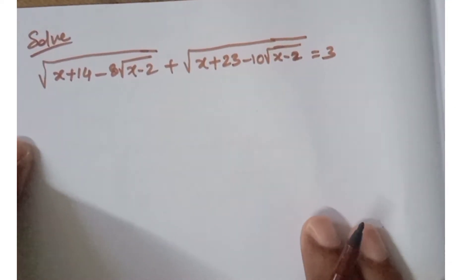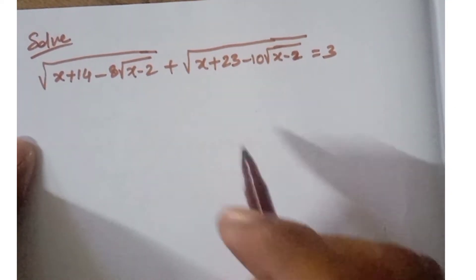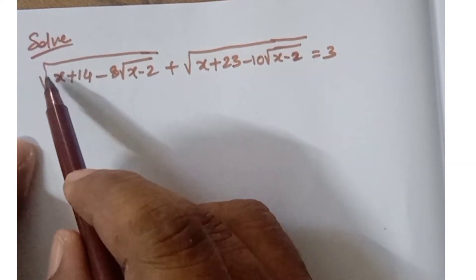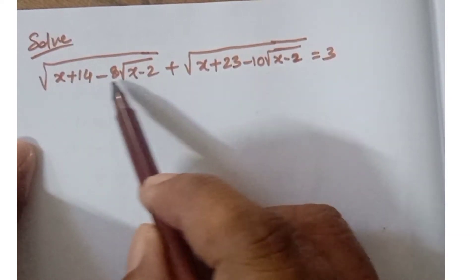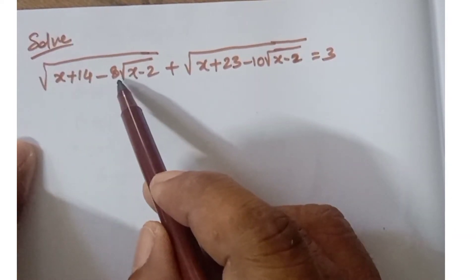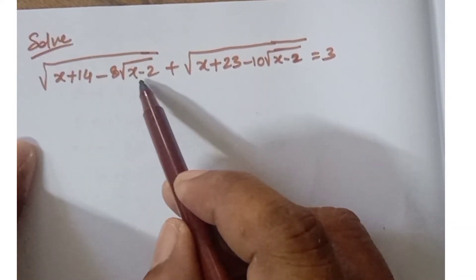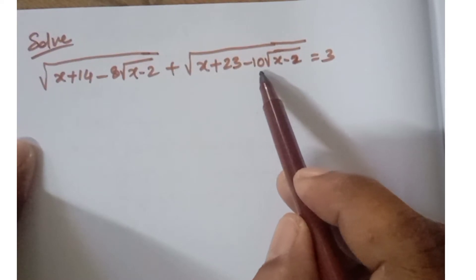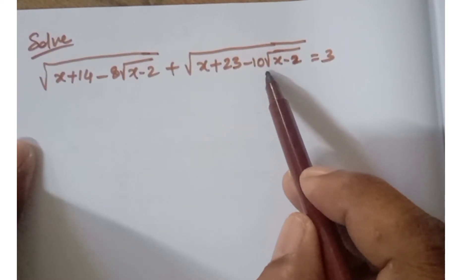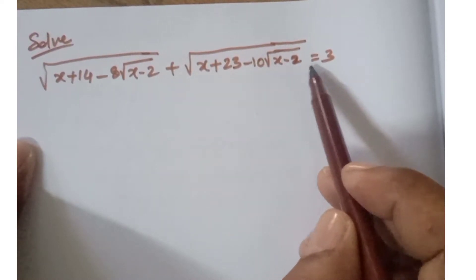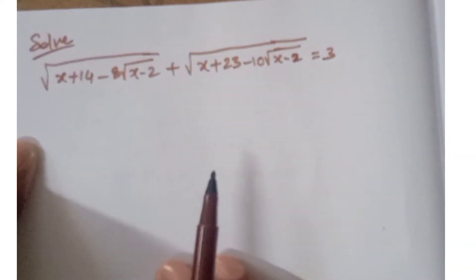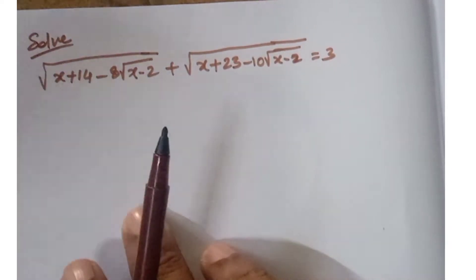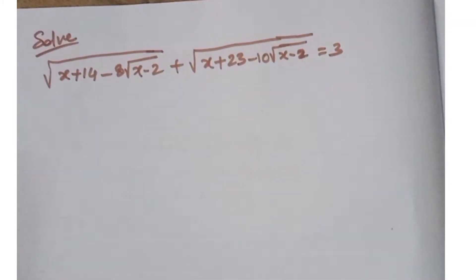Good morning children, welcome to NCG Max. The question is: you have to solve the sum of root of x plus 14 minus 8 root of x minus 2, plus root of x plus 23 minus 10 root of x minus 2, is equal to 3. You have to find the value of x.